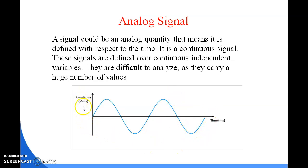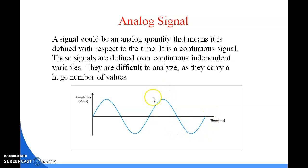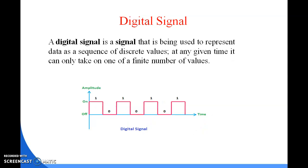This is the amplitude in volts, and this is the time period. This is the continuous form of the signal, and this signal contains a large number of independent variables, which is why it is very difficult to analyze. It is a sinusoidal curve representation.